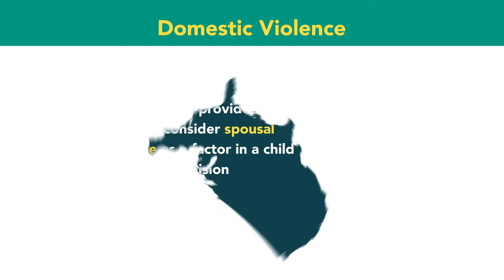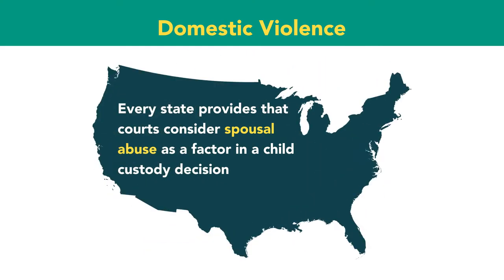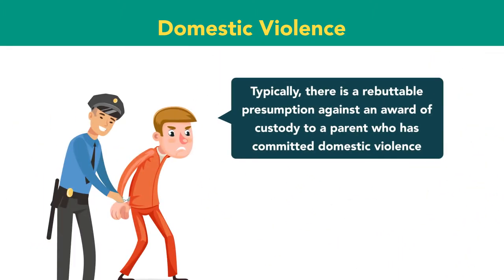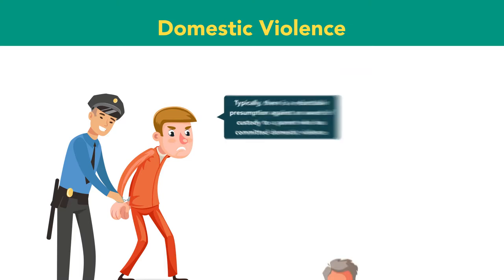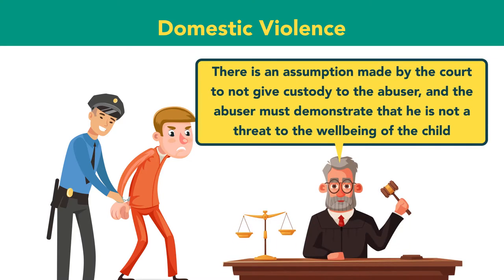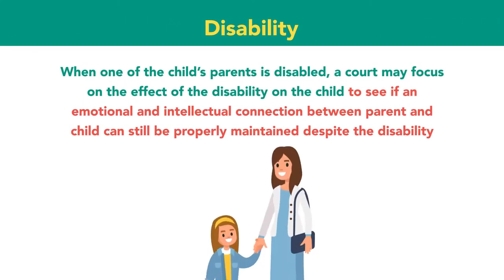Every state provides that courts consider domestic violence as a factor in a child custody decision. Typically, there is a rebuttable presumption against an award of custody to a parent who has committed domestic violence, meaning the abuser must demonstrate he is not a threat to the well-being of the child. When one parent is disabled, a court may focus on the effect of the disability on the child to see if an emotional and intellectual connection between parent and child can still be properly maintained.